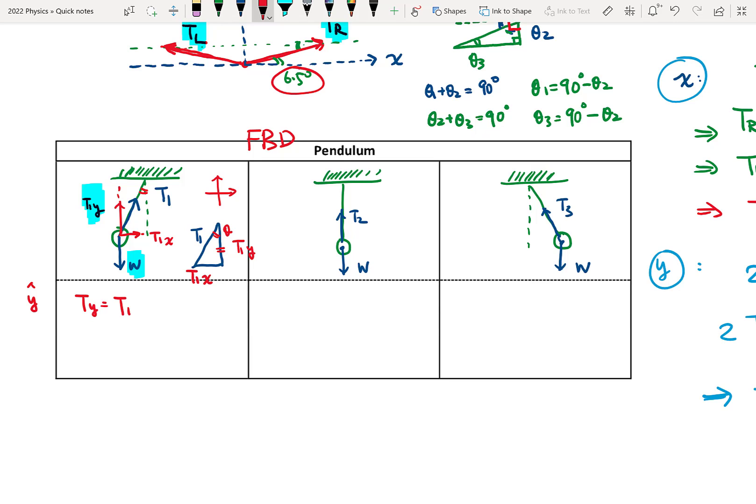So we do the y direction, okay. T1Y is equal to T1 cosine theta, and that will be balanced with weight, okay. And in direction X, TX will be T1 sine theta. Okay, and this one equals M A.